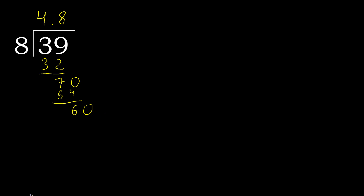8 multiplied by 8 is greater. Multiply by 7. Then subtract. Complete. 40. 0 point.